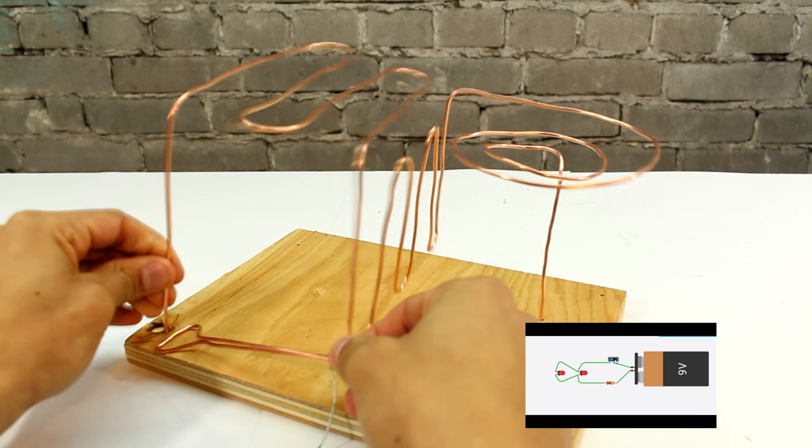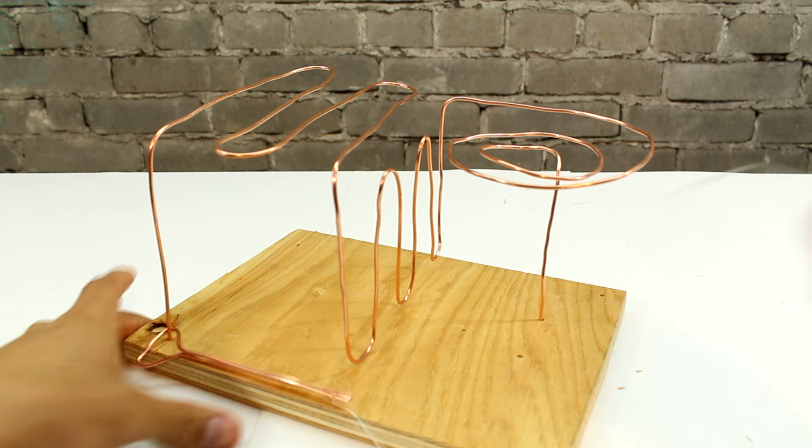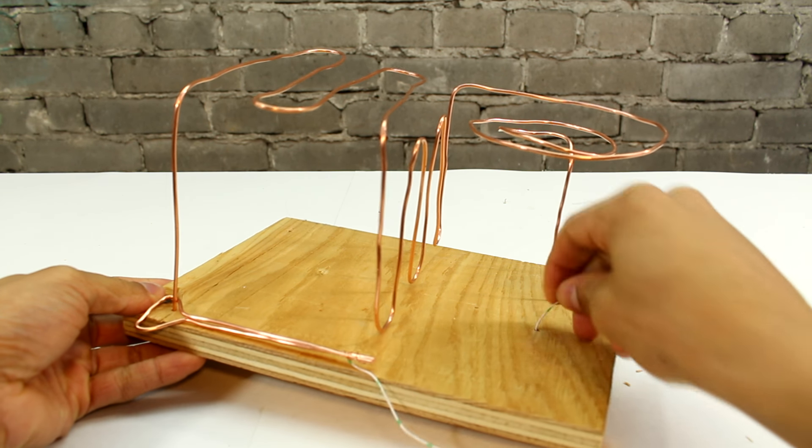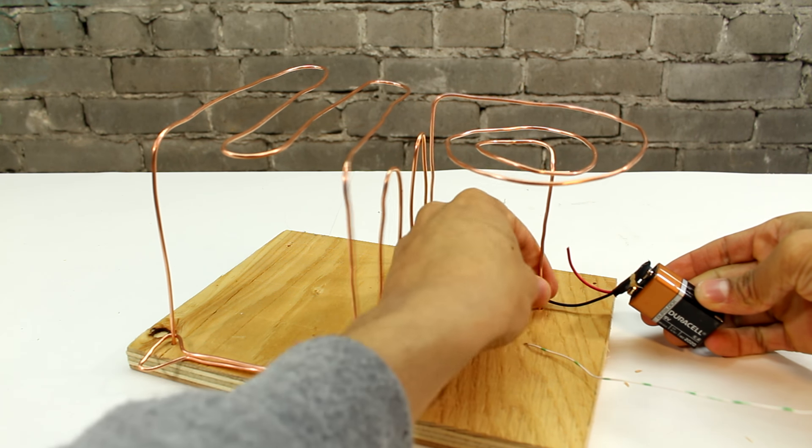Very similar to the circuit diagram that I have below in the bottom right. Except instead of a switch, we have our copper wires, and when the copper that we're holding in our hand touches the copper of the game, that is basically the equivalent of turning the switch on and off.